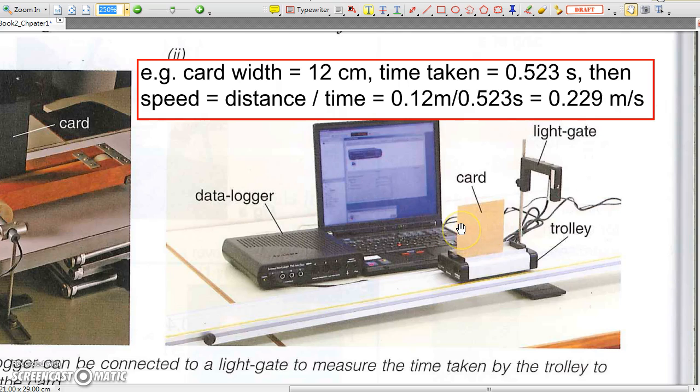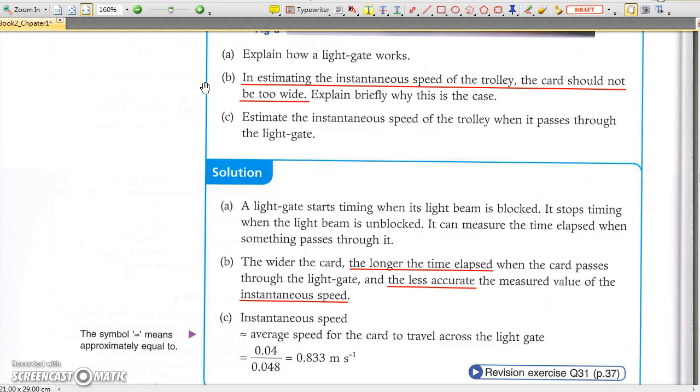Just like the example on page 6. As we want to measure the instantaneous speed of the moving trolley, the short time interval will give a more accurate measurement. So the card should not be too long.